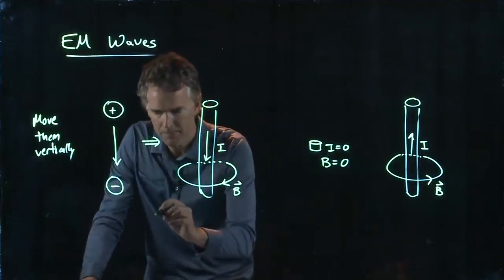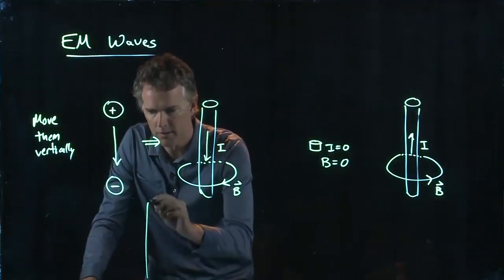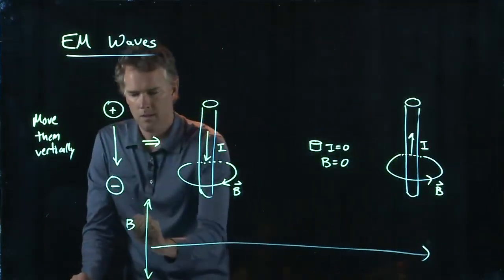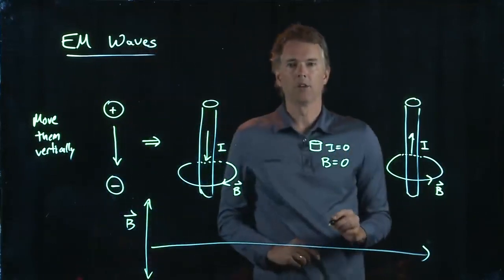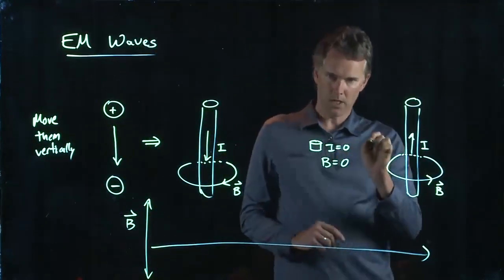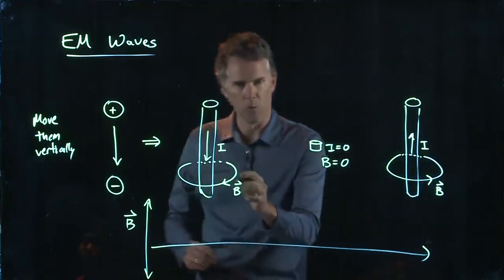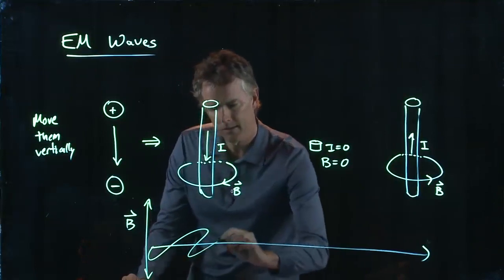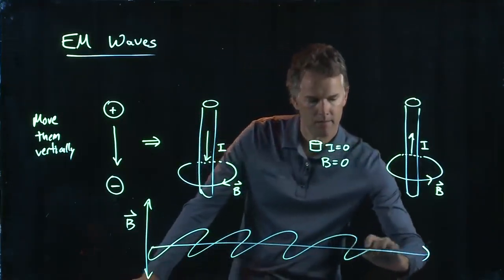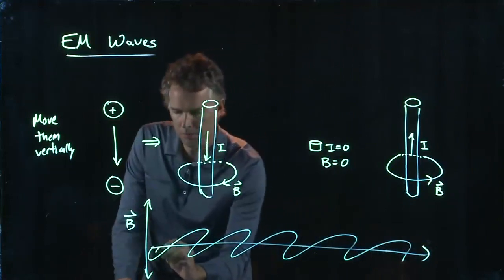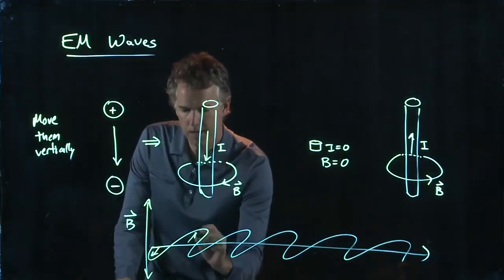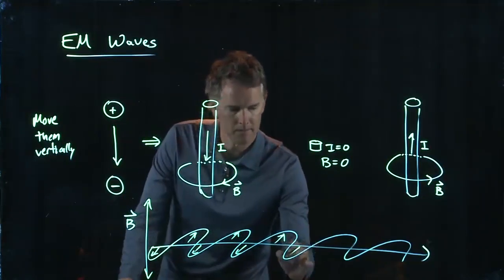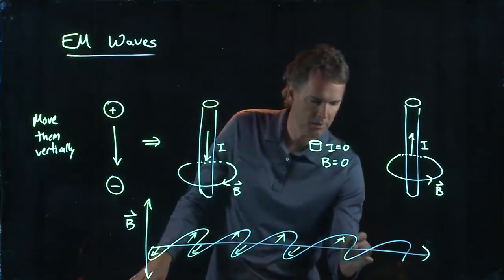And so if we draw B as a function of time, it is going into and out of the screen. If I think about just one side of this, B is now going to be like this. And this is supposed to be coming out of the screen and into the screen over and over again. And we're trying to draw it in the third dimension here.